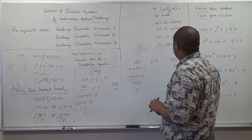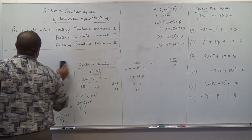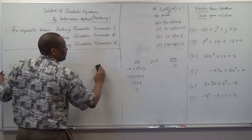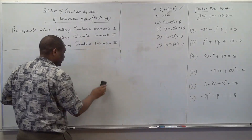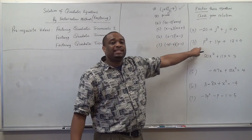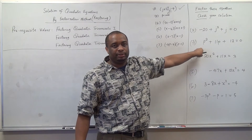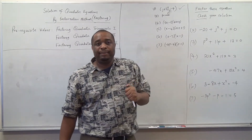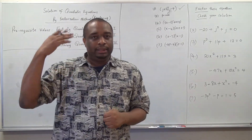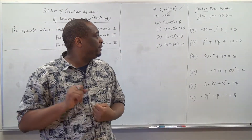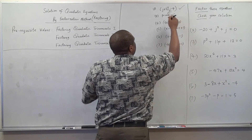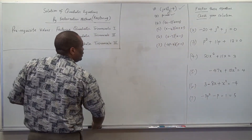Number three is prime. That means we can still solve number three, but it's not going to be using the factorization method. We can use completing the square method or the general formula method, which I will do in subsequent videos. For this video, we can't solve it by factorization, so we're leaving it for subsequent videos.